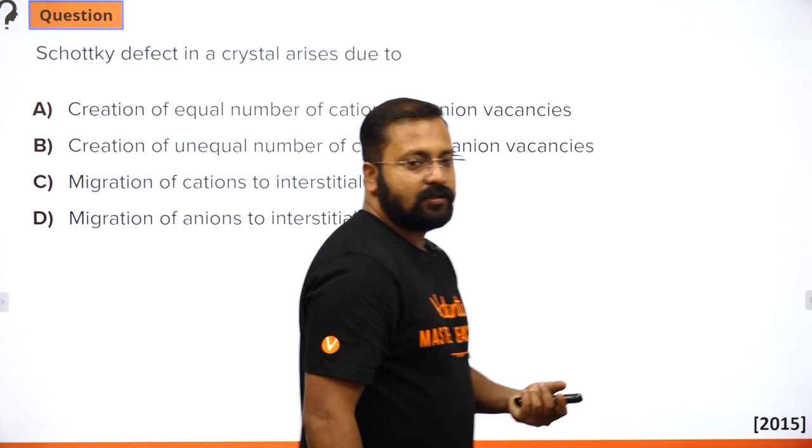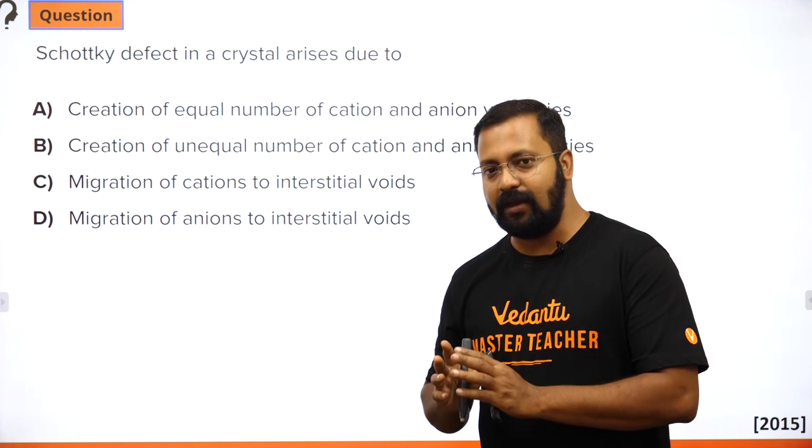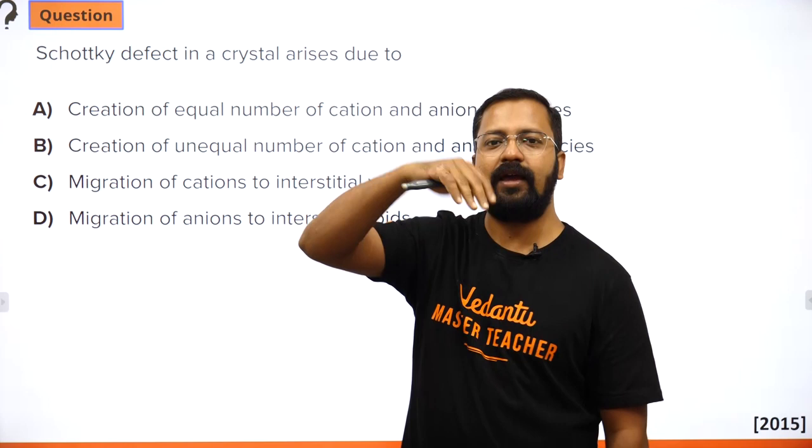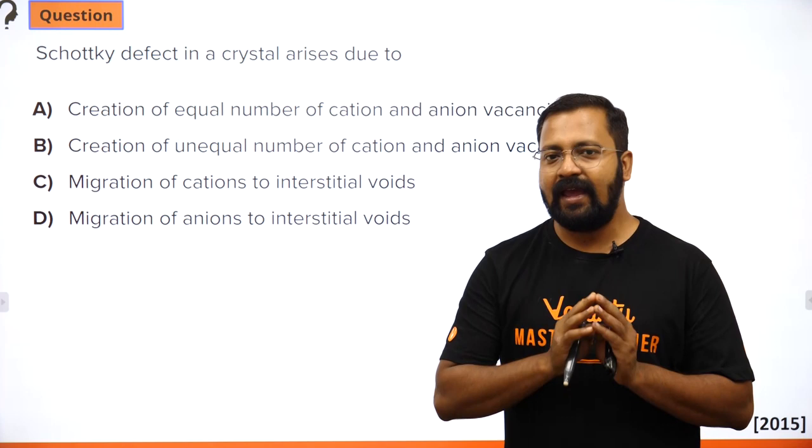Next question: Schottky defect arises due to creation of equal numbers of cation and anion vacancies — they are lost in pairs. So Schottky defect involves equal numbers of cation and anion vacancies.